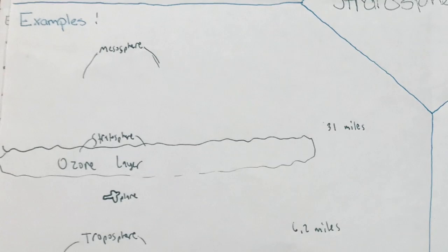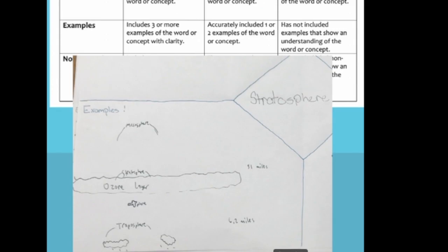Let's consider the student's list of examples next. The drawing lets you see that the student understands that the stratosphere is one layer of the atmosphere. The troposphere is the layer below the stratosphere, closest to Earth, and the mesosphere is above the stratosphere.